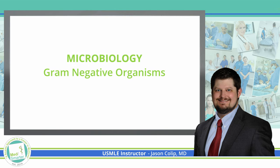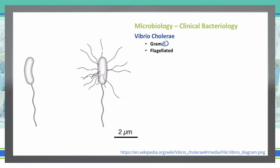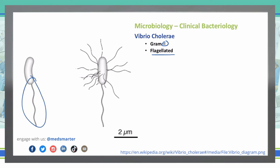Let's continue on with more gram-negative. Specifically, let's talk about Vibrio cholera. It is a gram-negative organism. It is flagellated, so it has a polar flagella associated with it. It can also have some fimbriae off of the side of it, but it's just one single flagella.